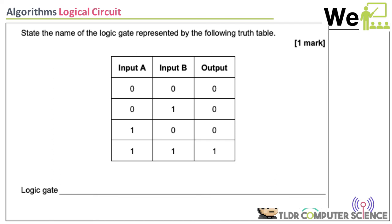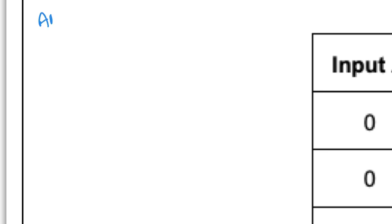Let's do a quick recap of the three logic gates. There are three we care about: AND, OR, and NOT. You need to be able to draw them and understand their logic using a truth table.